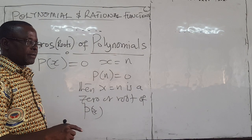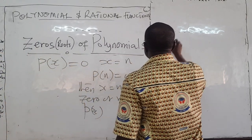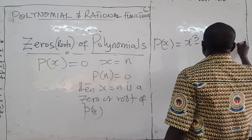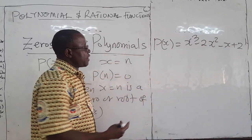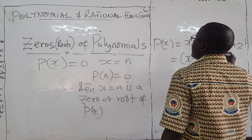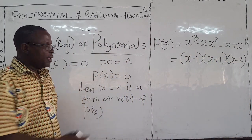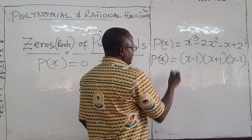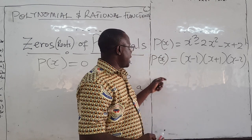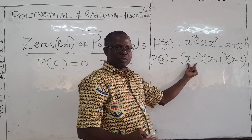Remember in the previous session, we had the polynomial P of x which was equal to x cubed minus 2x squared minus x plus 2, and we factorized it to get the factors x minus 1, x plus 1, and x minus 2. So if we equate each factor to zero, when x equals 1, then 1 minus 1 is zero.